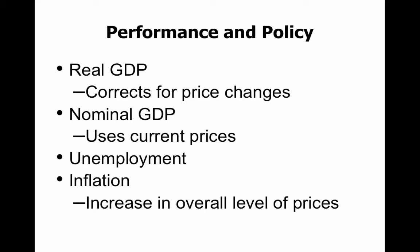Chapter 23 is just our basic introduction to macro. What we're really going to be talking about heavily is the idea of GDP — gross domestic product — which is a big deal. We've got real and nominal GDP. Real GDP is corrected for changes in price, primarily inflation. And then there's nominal GDP, which is just whatever it costs today.